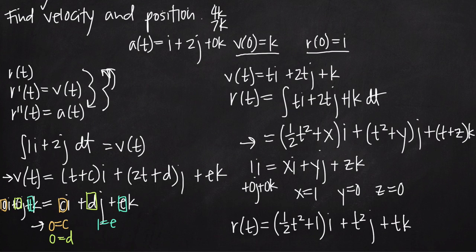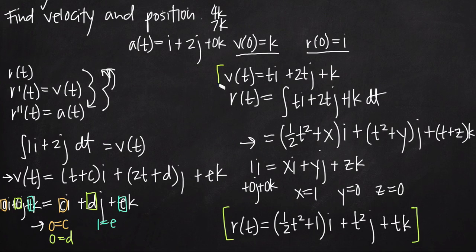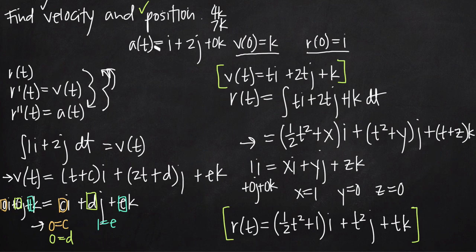And that's it. Here we have our position function, and here we have our velocity function. That's how we find the velocity and position vectors given an acceleration vector and initial conditions.